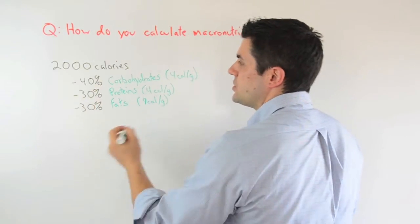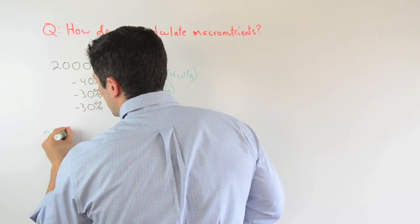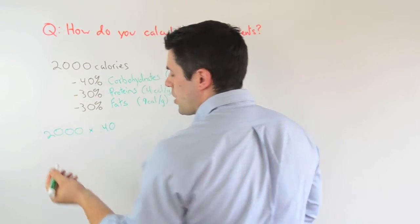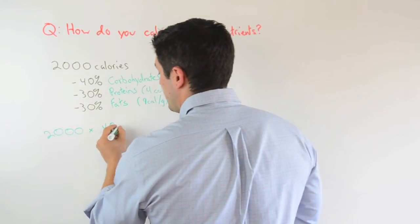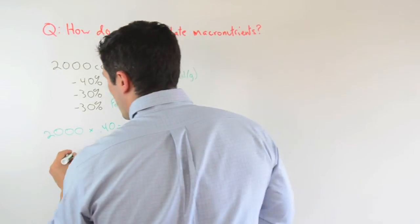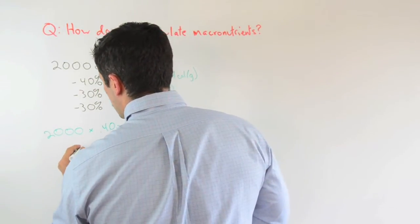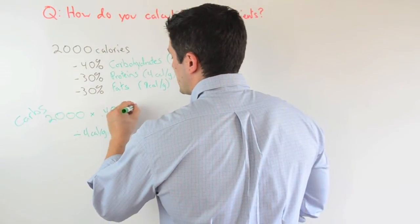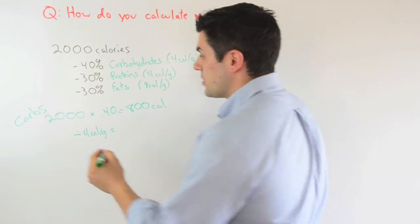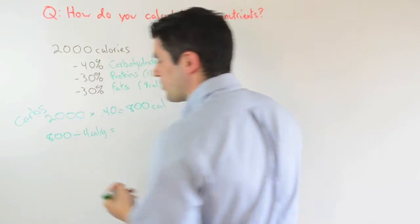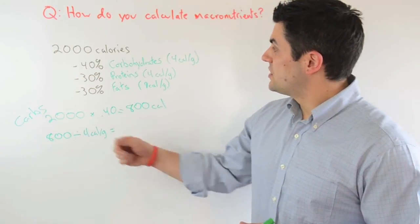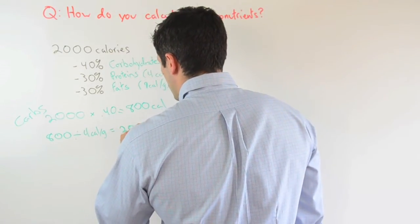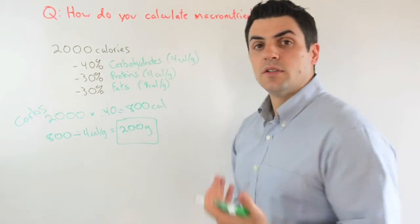So if we do the math here, we're going to start with 2,000 calories, and then we're going to multiply this by .40, so essentially by 40%. And then we're going to take that number, and we're going to divide that by four calories per gram. 2,000 times .4 is going to give us 800 calories. And we take that 800 calories and then we say 800 calories divided by four calories per gram. And that's going to give us 200 grams of carbohydrates per day.